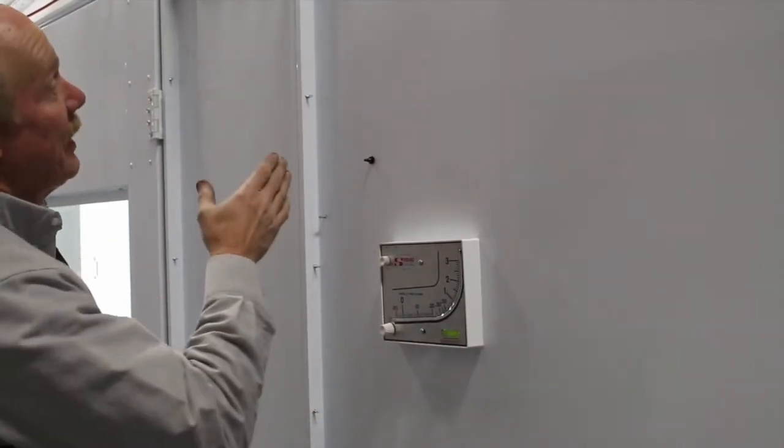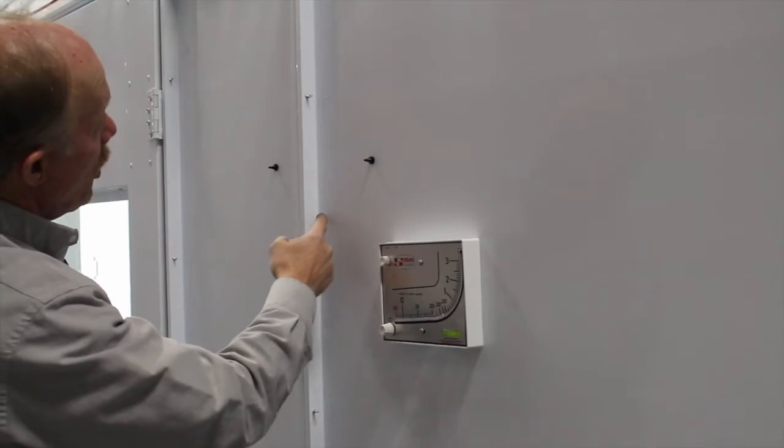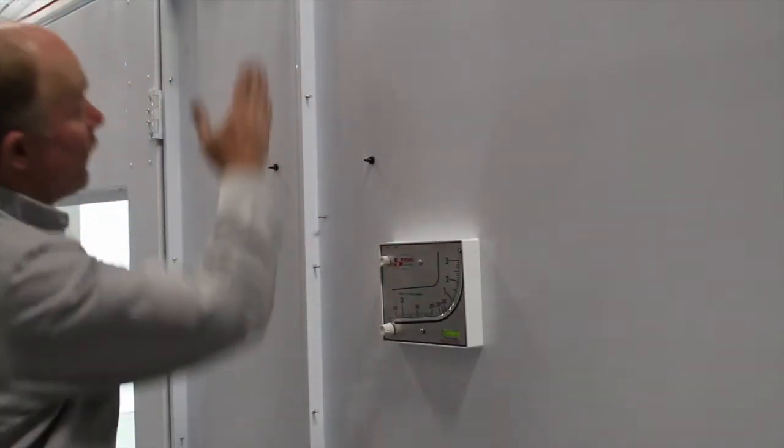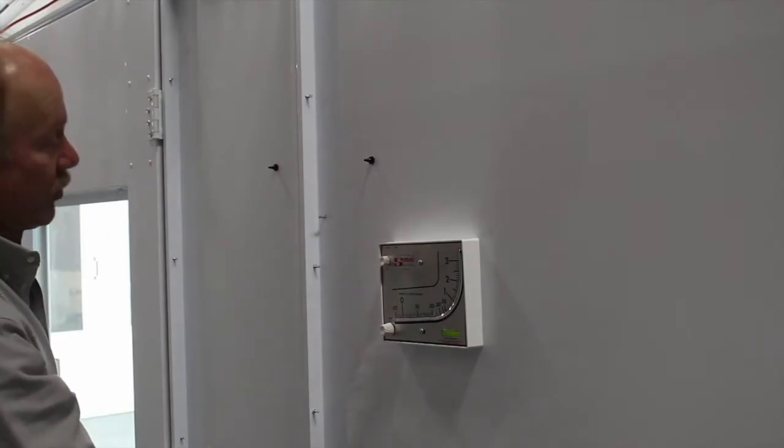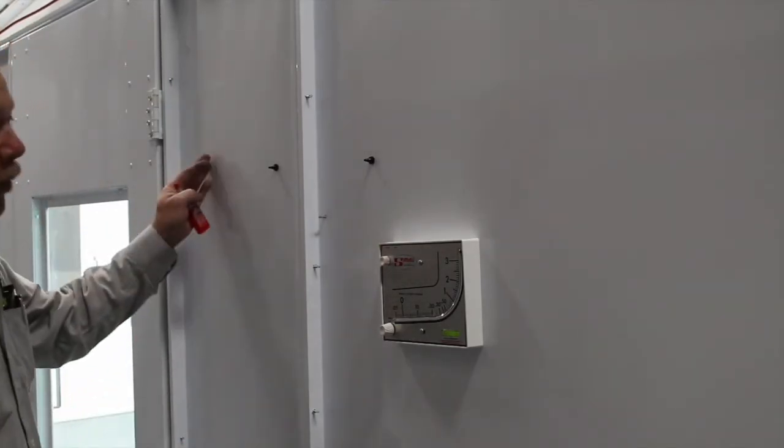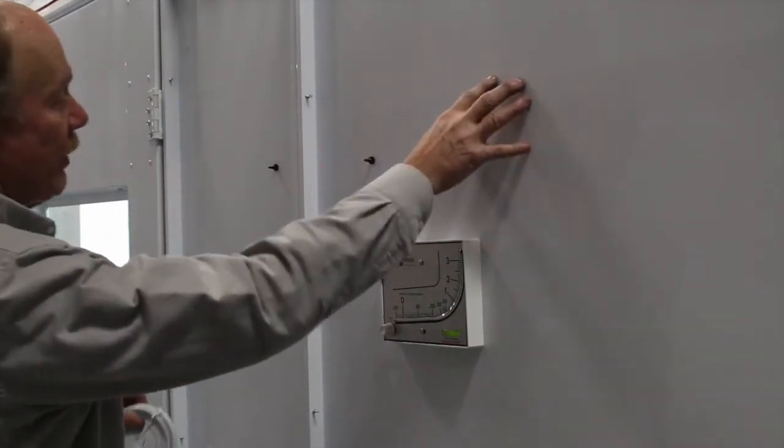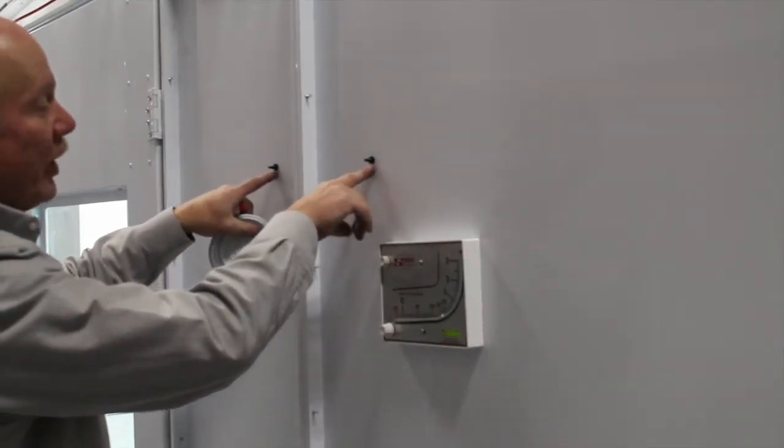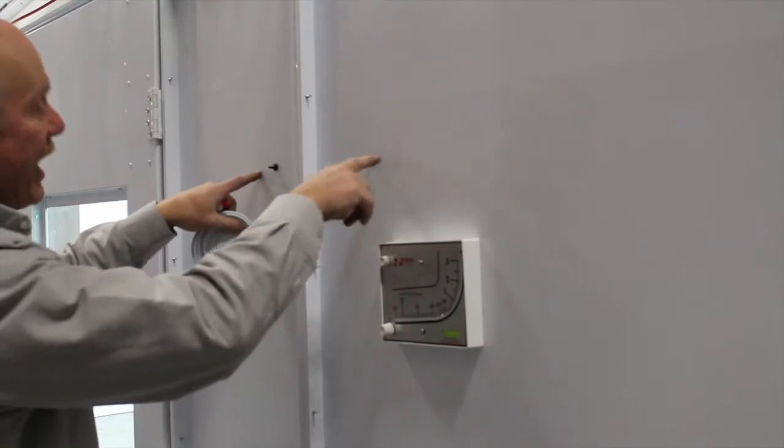You have to locate the filter wall. You can locate it by the screws that are protruding from inside coming out. This line here is where your filters are. This is before the filters. This is after the filters. And these are the two nipples that we installed to read before and after the filters.